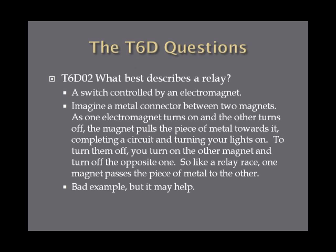To turn it off, you turn off that electromagnet and turn on the opposite one, and the piece of metal swings back, either opening the circuit or starting another circuit. So just remember, a relay is a switch controlled by an electromagnet.